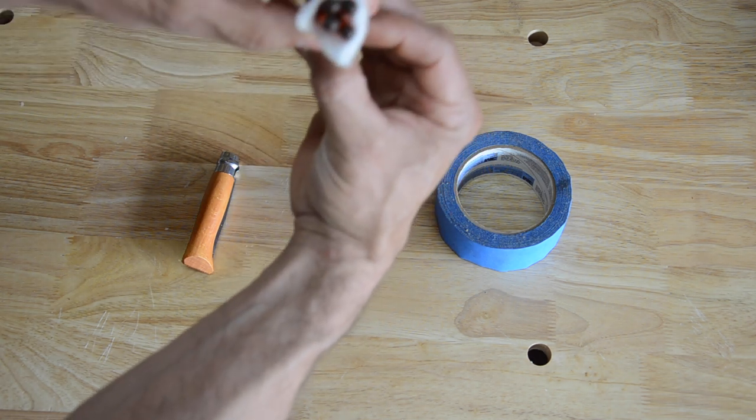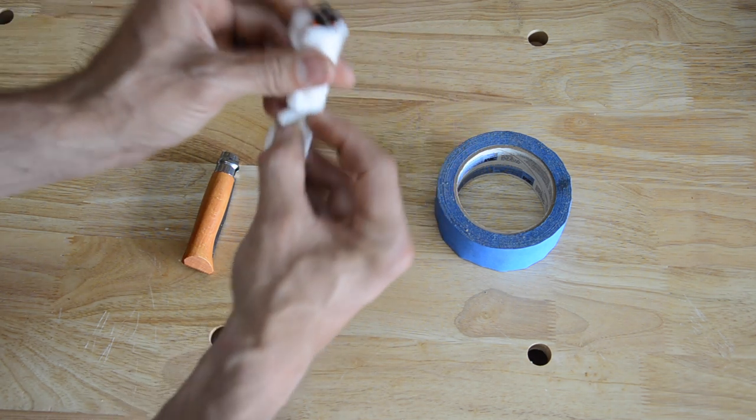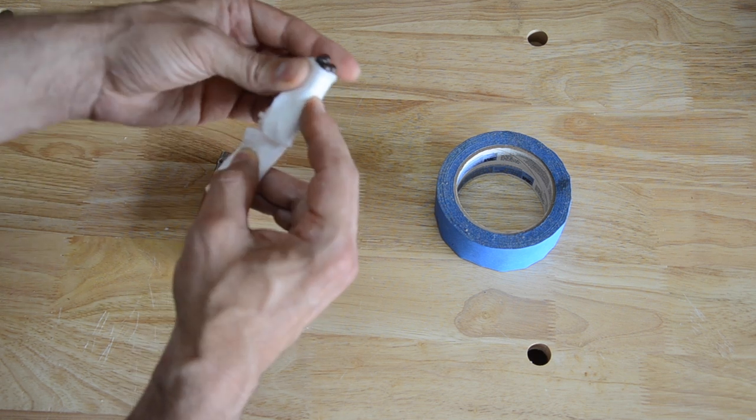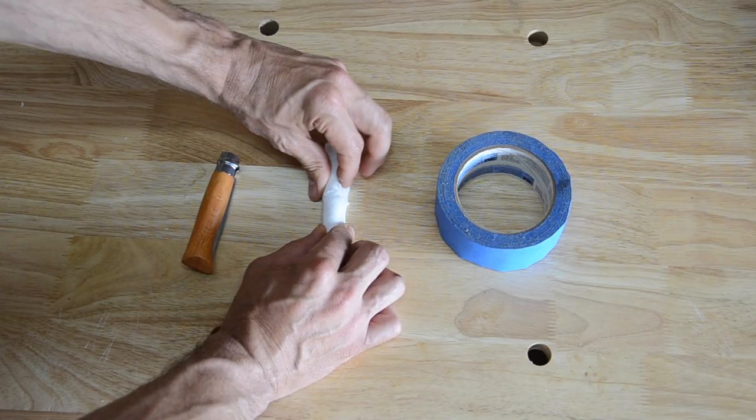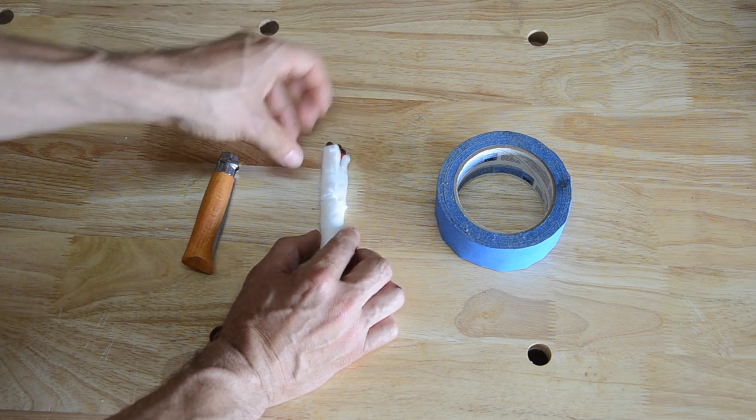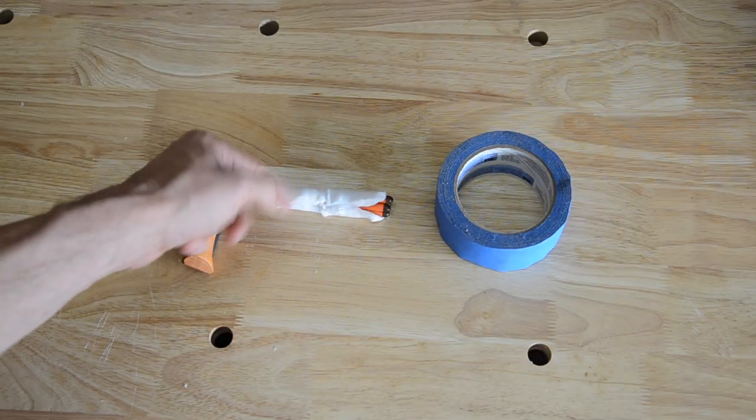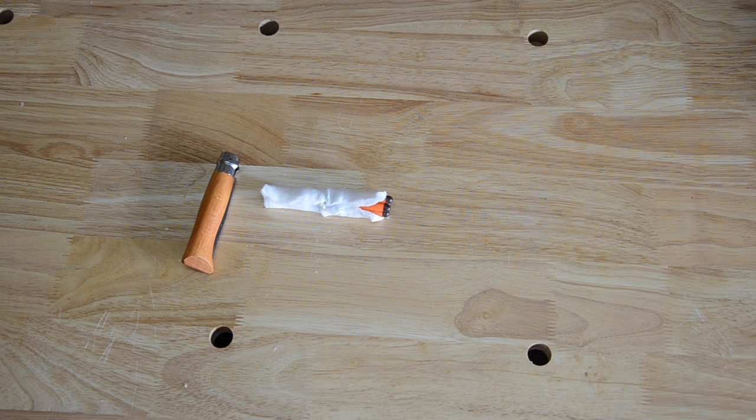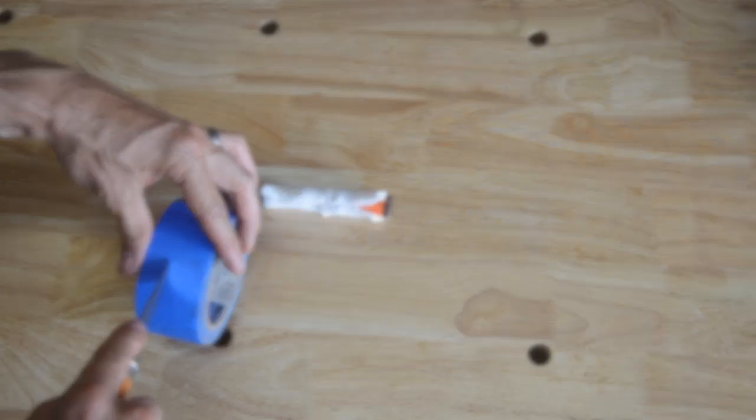And then pinch them together like that. And I'll kind of work the cotton. What I'm trying to do is wrap these completely in cotton, and that's not going to stay until I dip it in the wax. I'm going to cut me a couple of little strips of masking tape.